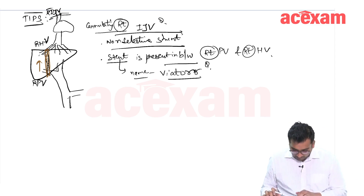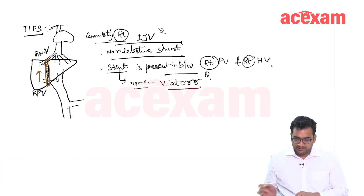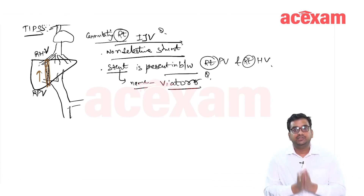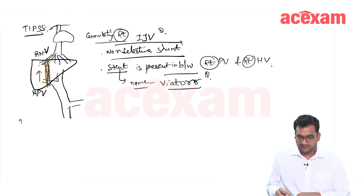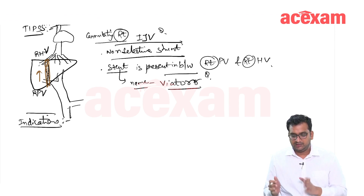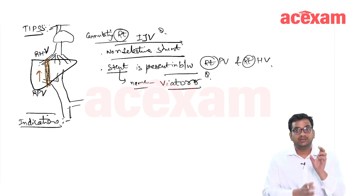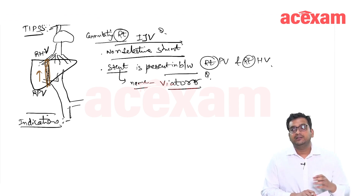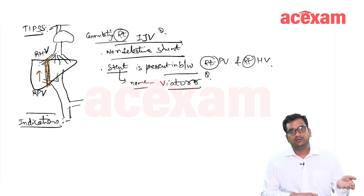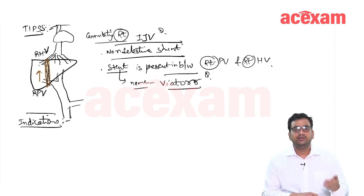The name of the stent is Viatorr, and we cannulate the right IJV to make the communication between the hepatic vein and the portal vein. We perform TIPS when there is a patient with cirrhosis and portal hypertension, large varices, and the patient is not going to receive a liver transplant in the next six months to one year.